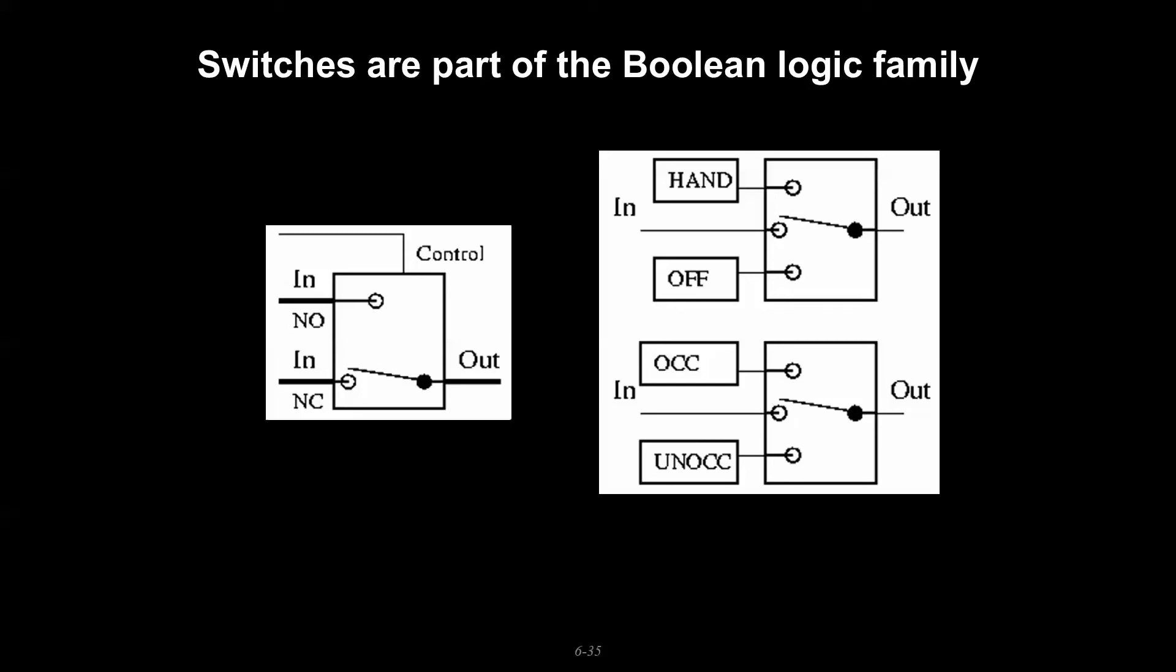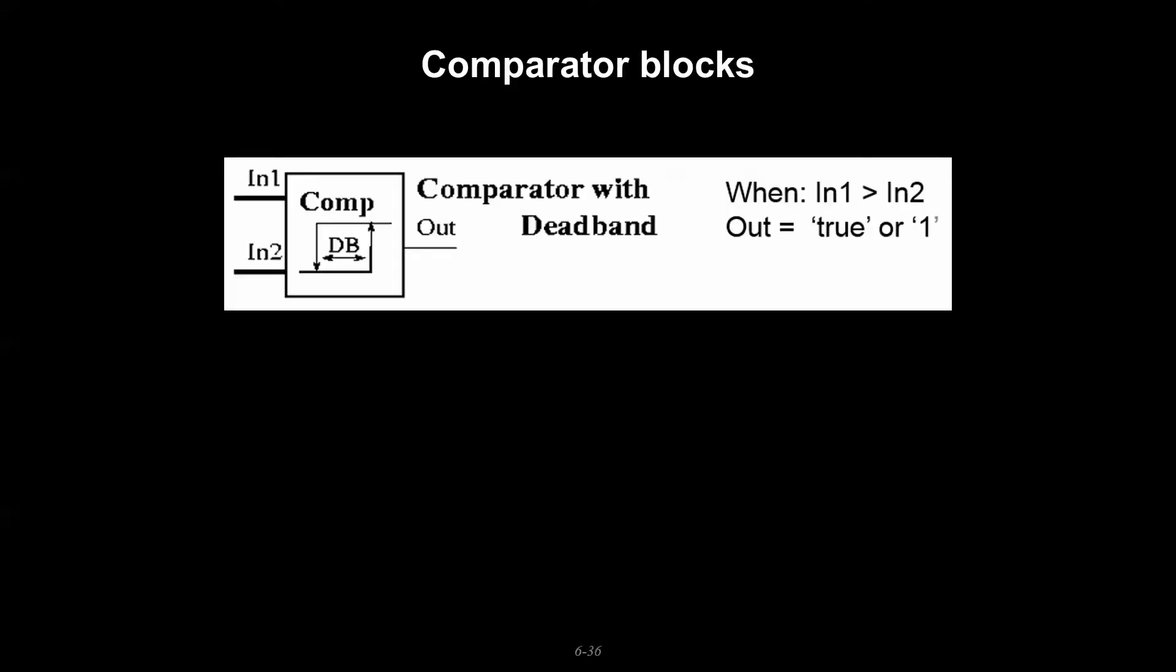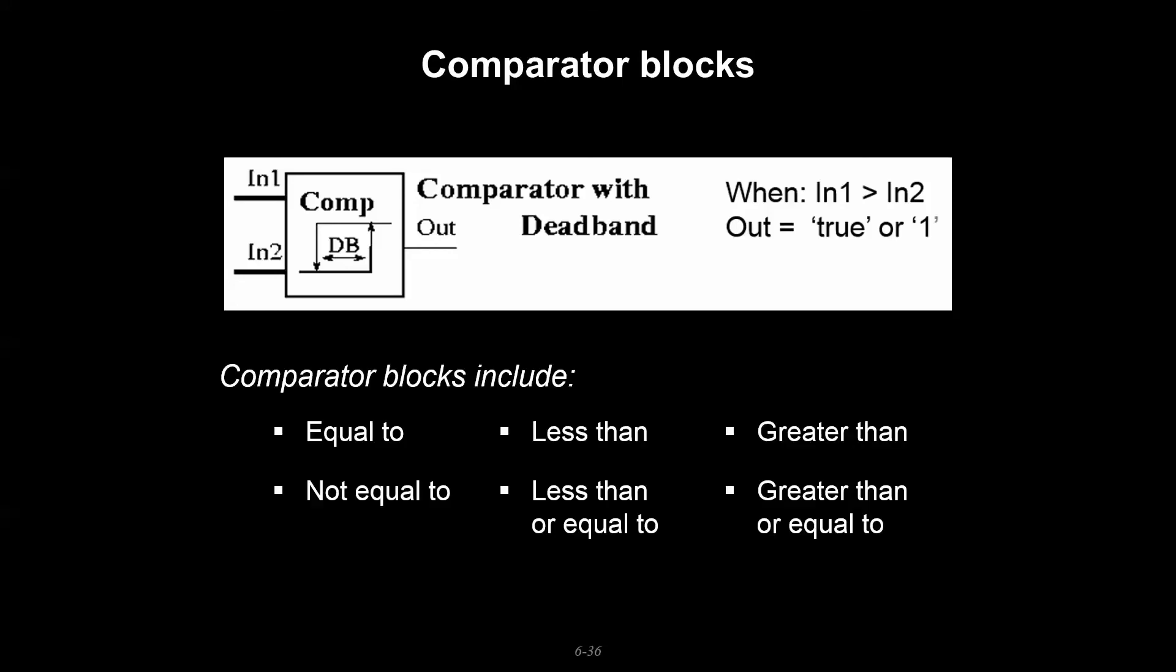Comparator blocks can be important as well, where you have two analog values coming to this comparator block, and if they meet the condition within the dead band prescribed, then you would pass a one through rather than a zero. There's different flavors this may take on and they all have something to do with being equal or less than or greater than or some combination of that.